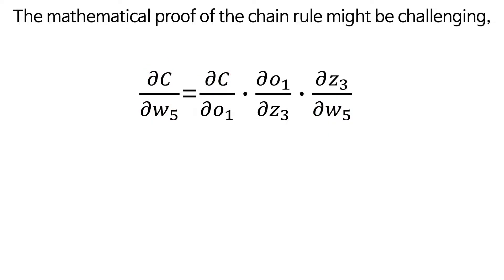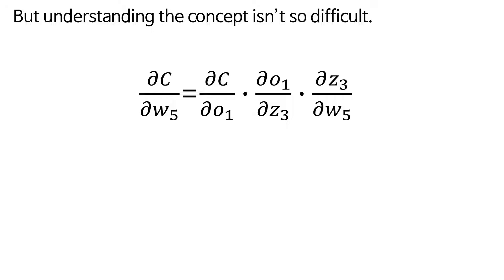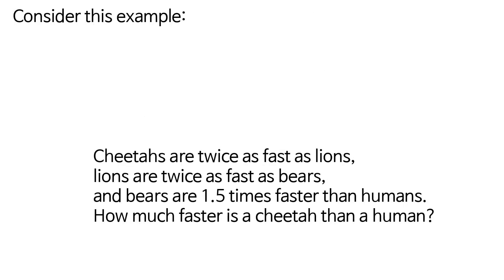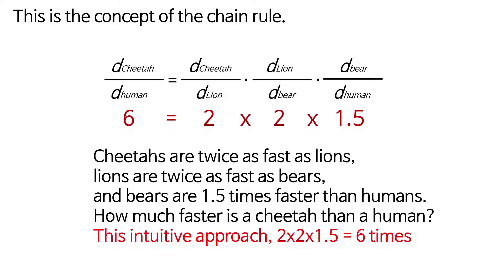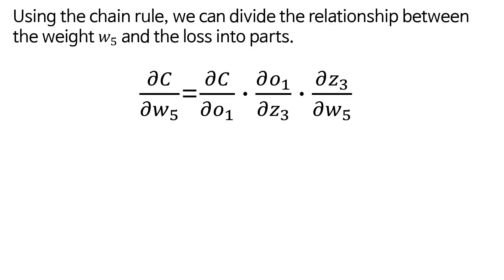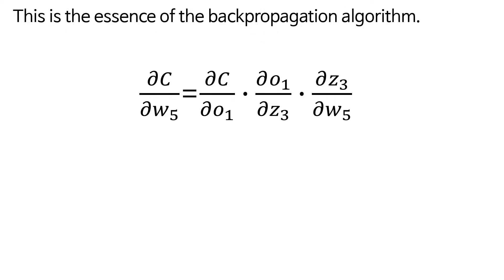The mathematical proof of the chain rule might be challenging, but understanding the concept isn't so difficult. Consider this example: cheetahs are twice as fast as lions, lions are twice as fast as bears, and bears are 1.5 times faster than humans. How much faster is a cheetah than a human? The answer is six times faster. This intuitive approach—two times two times 1.5 equals six times—is the concept of the chain rule. Using the chain rule, we can divide the relationship between the weight w5 and the loss into parts. This is the essence of the backpropagation algorithm.